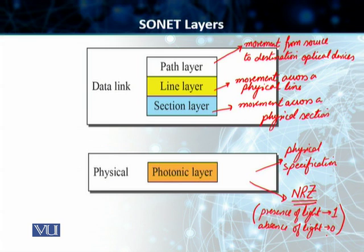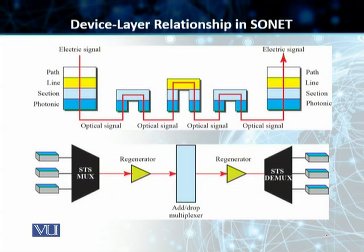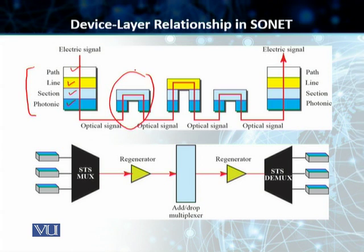If we map these layers to different devices: the STS multiplexer is a four-layer device, involved at the photonic layer, section layer, line layer, and path layer. The regenerator is a two-layer device, involved only at the photonic layer and the section layer. The ADM, or add-drop multiplexer, is a three-layer device — photonic, section, and line. And the DMUX is also a four-layer device.